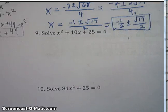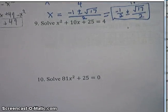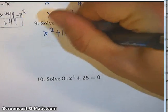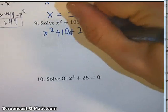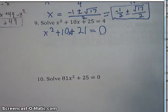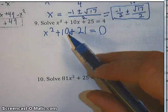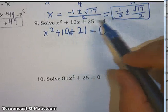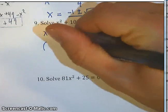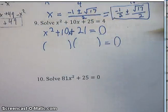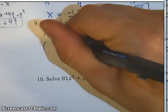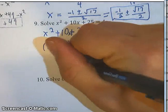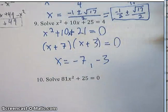Now to finish off this page. Solve x² plus 10x plus 25 equals 4. First step: set it equal to 0 by subtracting 4, giving x² plus 10x plus 21 equals 0. Looking for two numbers that multiply to 21 but add to 10 — that's 7 and 3. So it factors as (x plus 7)(x plus 3) equals 0, giving x equals negative 7 and x equals negative 3.